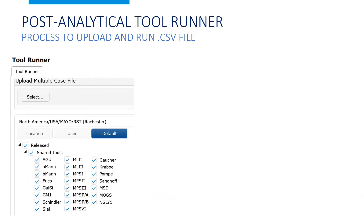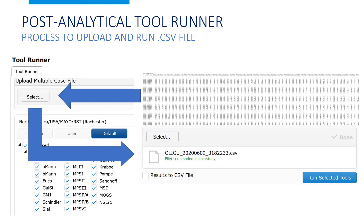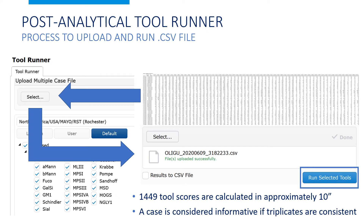The CSV file is uploaded by clicking the select button, navigating on the server to the file location, and choosing the correct file. Next, you run the selected tools. When this is done, CLEAR calculates 1,449 tool scores in about 10 seconds. A case is considered informative for a condition if it is informative in all three runs. If it is only informative in one or two runs, it is considered not a completely reliable result and is discarded as a possibility.